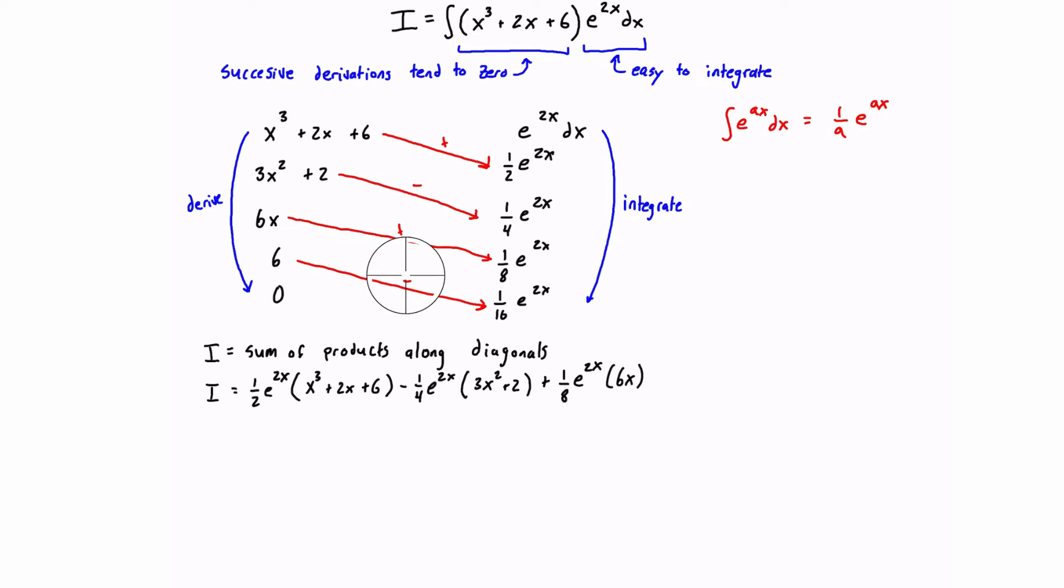And then the last one here, it will have a negative sign. And we are multiplying two positive terms. So this will, in fact, be a minus sign. So that's just going to be 1/16 e^(2x) times 6.